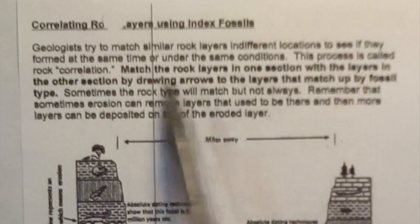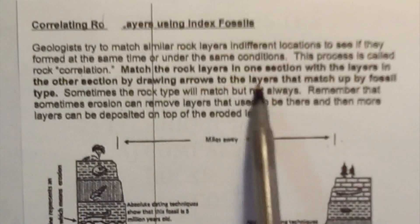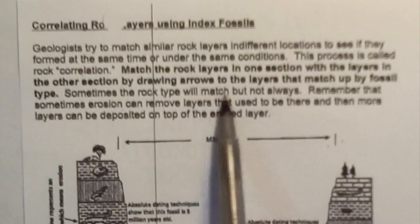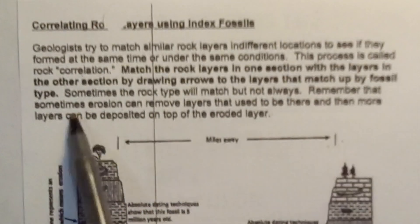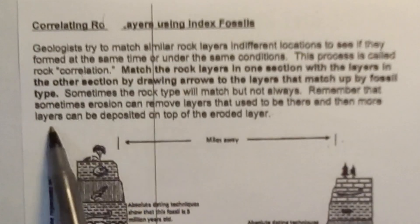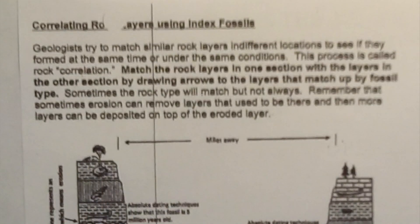Match the rock layers in one section with the layers in the other section by drawing arrows to the layers that match up by fossil type. Sometimes the rock type will match, but not always. Remember that sometimes erosion can remove layers that used to be there, and then more layers can be deposited on top of the eroded layer.